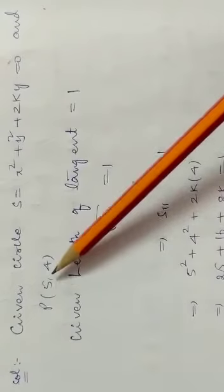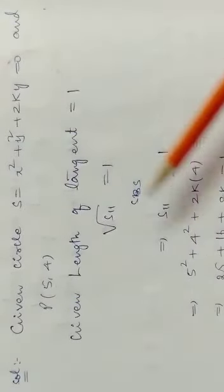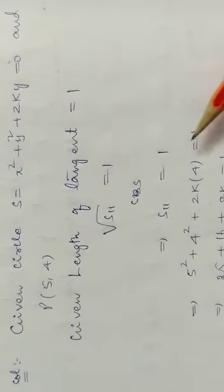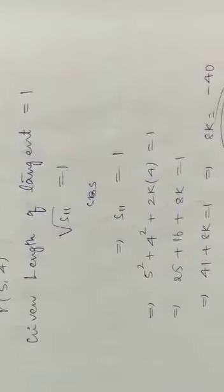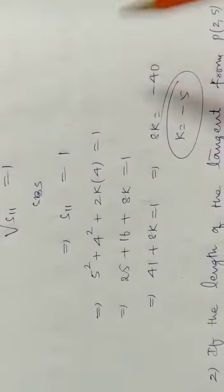In place of x put 5 and y put 4. 5 square plus 4 square plus 2ky times 4 equal to 1. That's 25 plus 16 plus 8ky equal to 1.